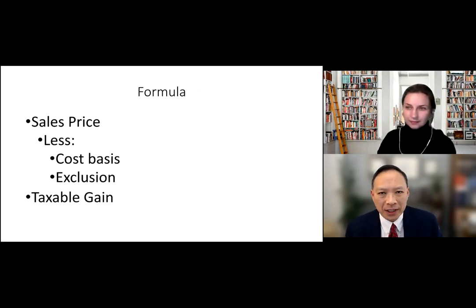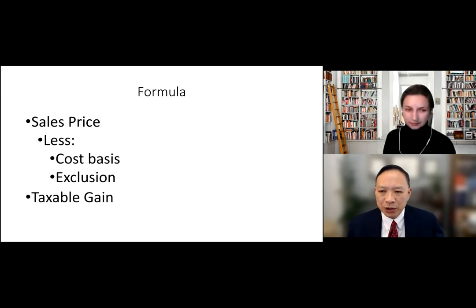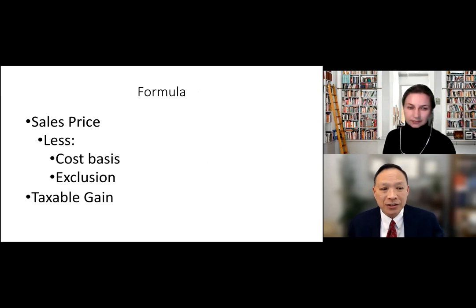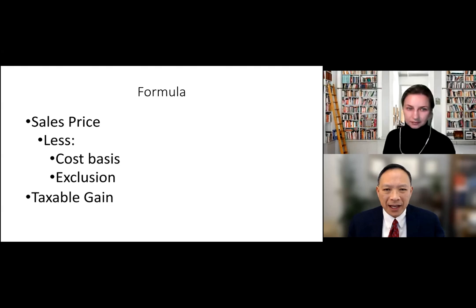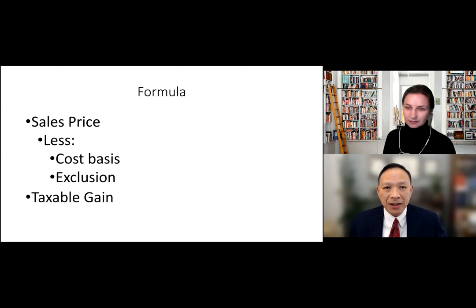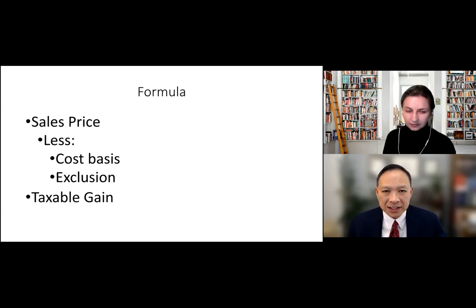Here's the basic formula: start with the sales price, subtract the cost basis of the home, then subtract the gain exclusion — that's $250,000 if you're single or $500,000 if you're married filing jointly. What remains is your taxable gain. This law has been in place since 1997. Many people still ask about the old rule — buying another house within two years to defer the gain — but that law changed in 1997.